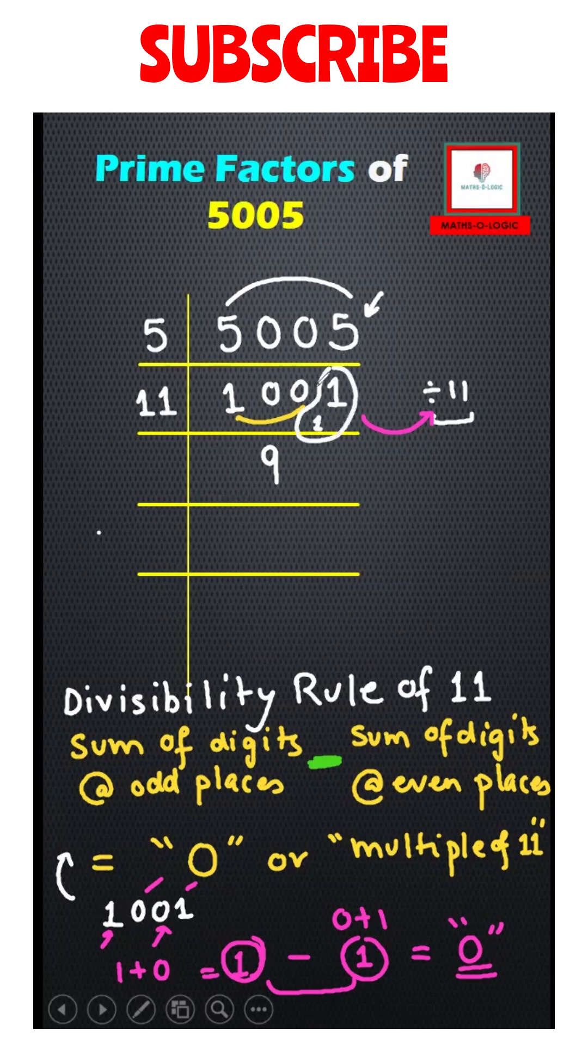The number left to be divided is 11 now. 11 times 1 is 11. Now the remainder is 0.